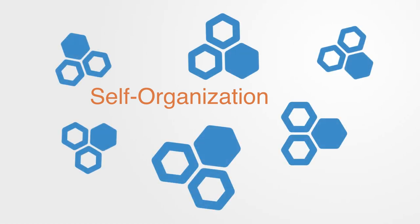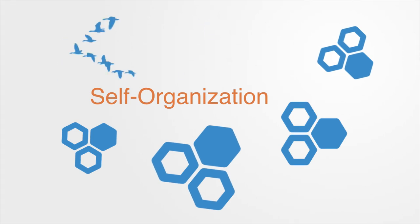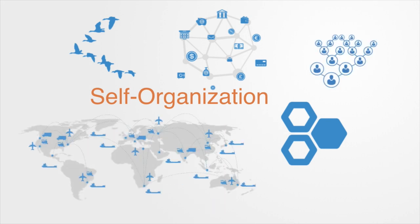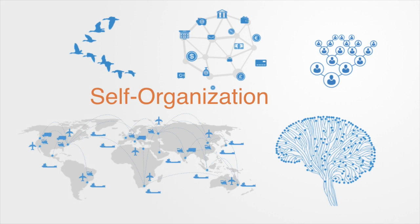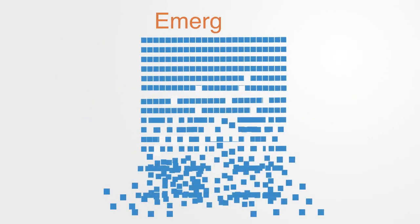Complex systems are composed of many small parts without centralized control, examples being flocks of birds, financial markets, social networks, global logistics networks, or the human brain. Without centralized control, global organization is an emergent feature of the local interactions between the parts. The term emergence is a general concept referring to how new levels of organization are formed as we put component parts together.